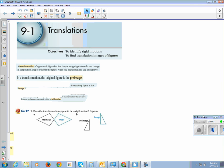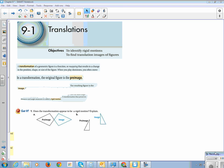This is Chapter 9, Section 1, Translations. Our learning objective, which I expect on every set of notes that you guys take and turn in for my class, is to identify rigid motions and to find translation images of figures.